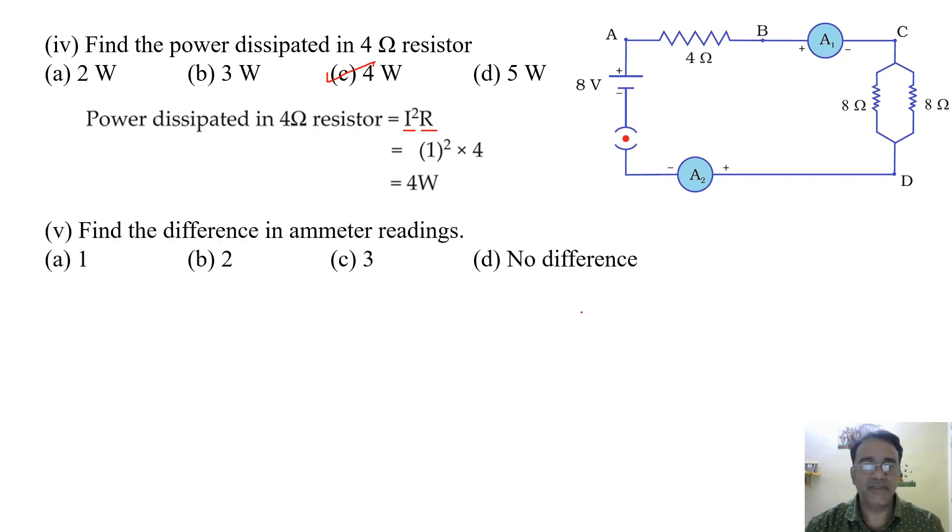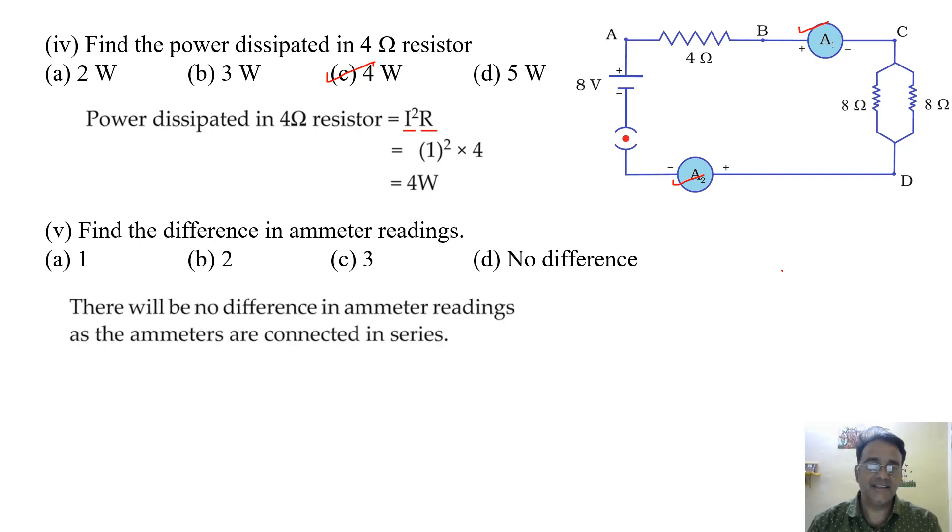Now we will move toward the last question. Find the difference in ammeter readings A1 and A2. Now because these two ammeters are connected in series and we know that in series the current remains same. Therefore there will be no difference in ammeter readings as the ammeters are connected in series. The correct answer is the last one that is D.